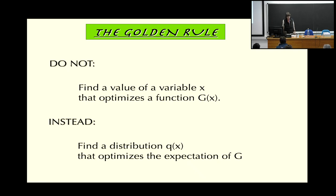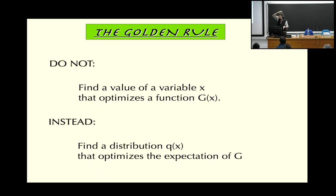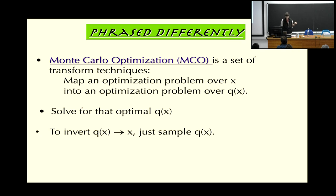The golden rule, so to speak, that underlies many heuristic techniques for optimization is: rather than directly try to find the value of a high-dimensional variable x that you would like to optimize — for example, to maximize some function g of x — instead, search for a distribution q of x that optimizes the expected value of g. The advantage is that you can now be doing your search over the space of distributions rather than over the space of the underlying variables, over the event space of your sigma algebra.